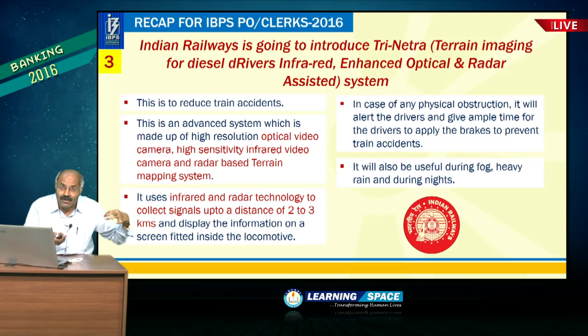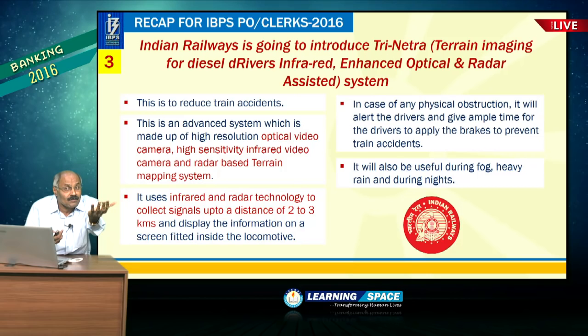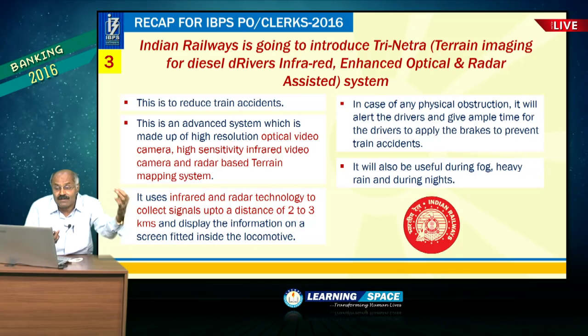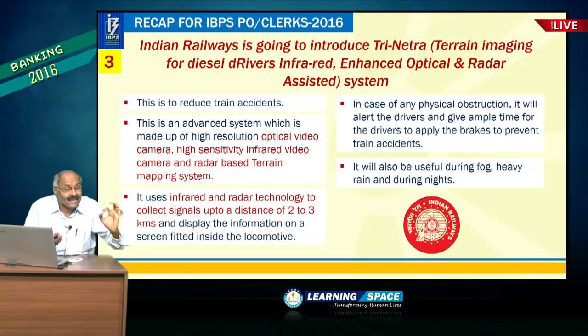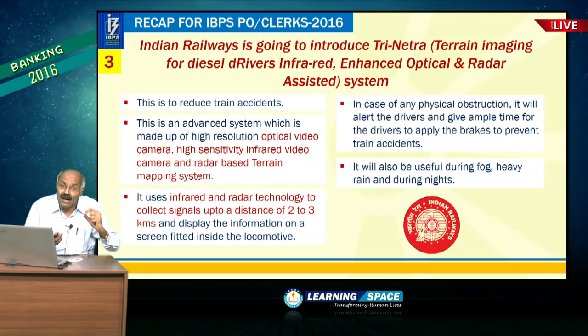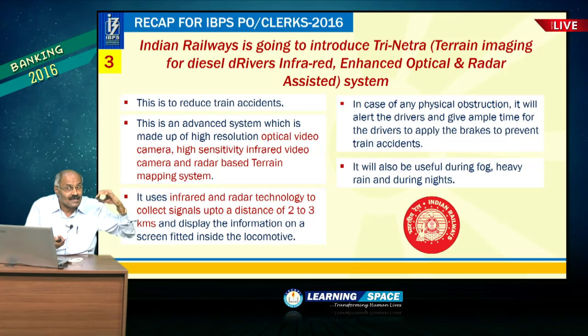Look at TRINITI. Full form: Terrain Imaging for Diesel drivers Infrared enhanced optical and Radar Assisted system. This is an Indian Railways project to avoid collision. Infrared and radar technology collect signals up to 2 to 3 kilometers. Also remember: Mission Raftar is increasing speed potential to 160 km/h, and the fastest train currently is Gatiman Express.